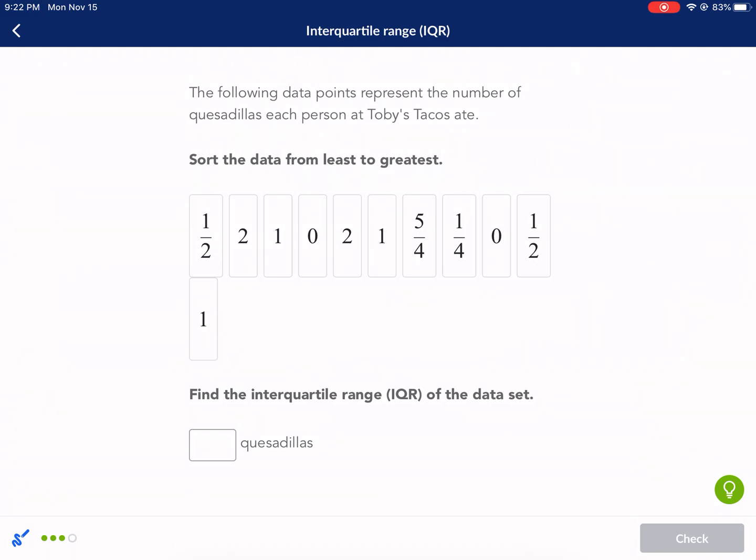Following data points represent the number of quesadillas each person at Toby's Tacos ate. Oh boy. I got to sort it again. Okay. So I think you guys get the gist of it. If you have any questions on this, let me know. But here's, I'm just sorting at this point, kind of a real basic exercise.